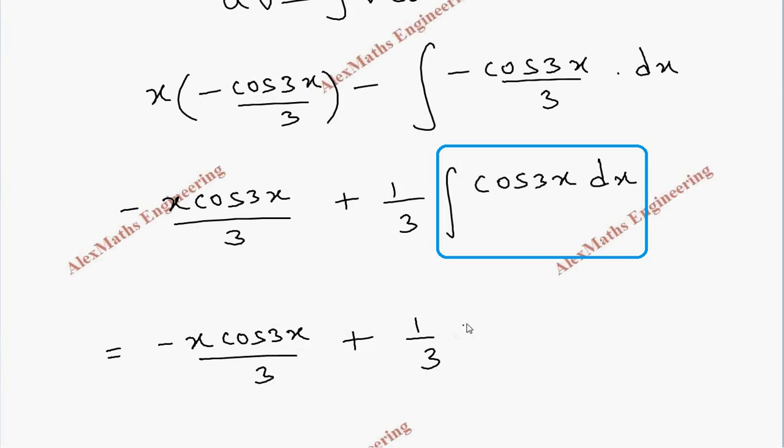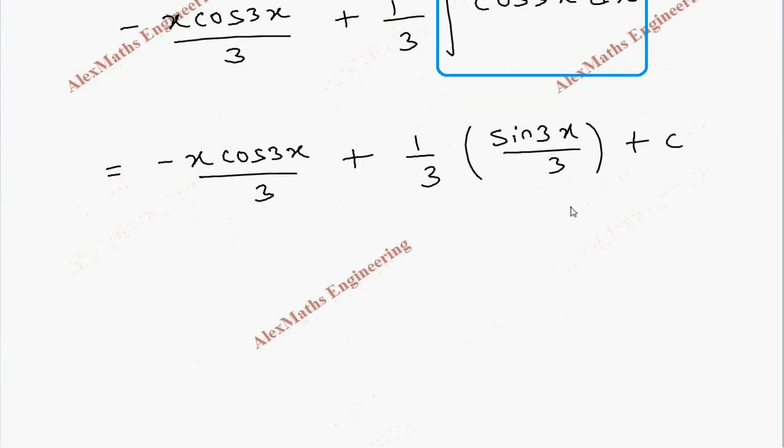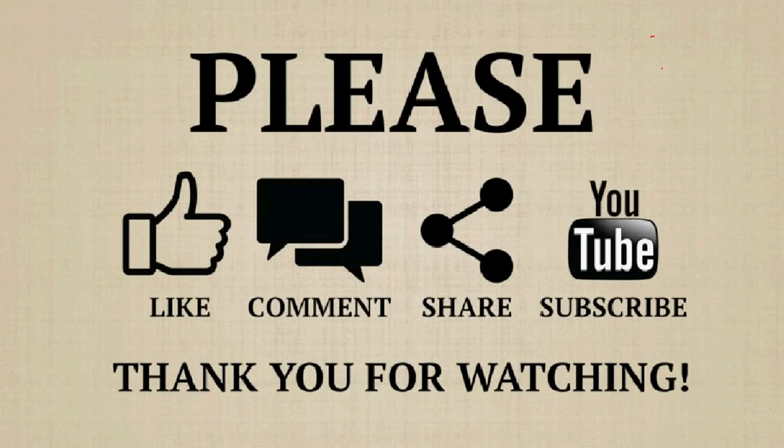Integration of cos 3x is sine 3x by 3 plus c. So totally we have minus x cos 3x by 3 plus 1 by 9 sin 3x plus c. This is the final answer.